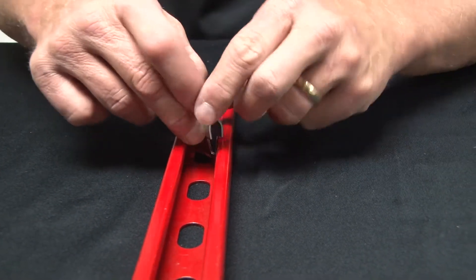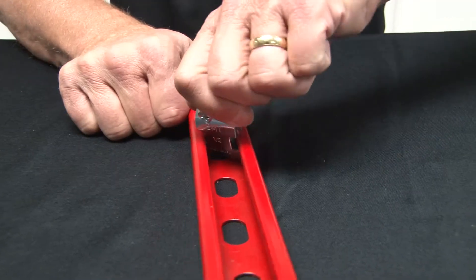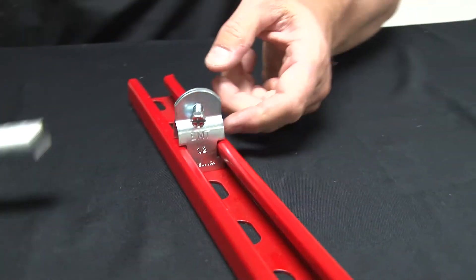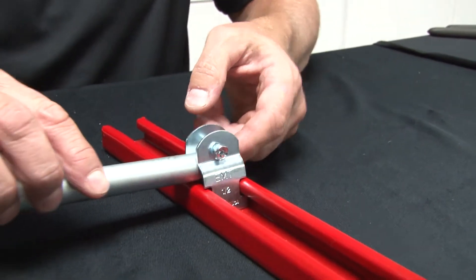Like so, twist it in place, and then slide your conduit directly through the opening.